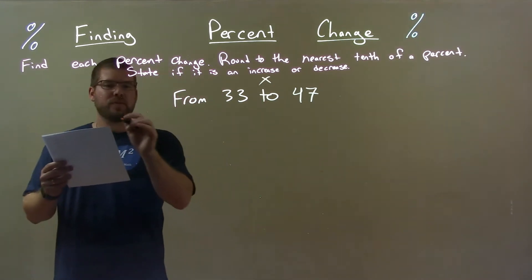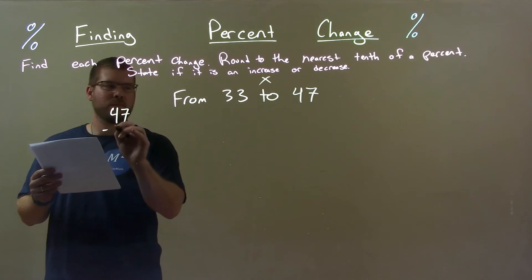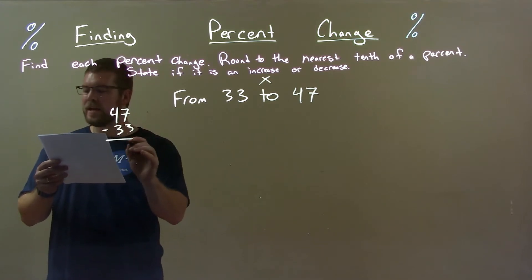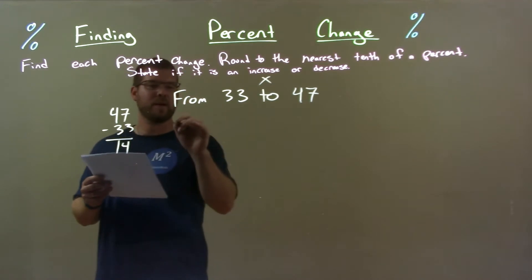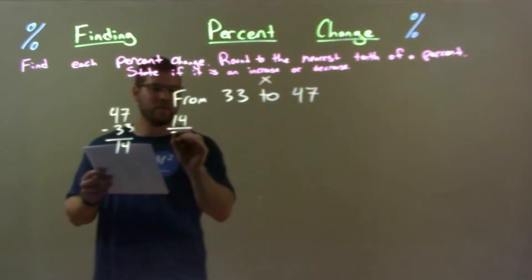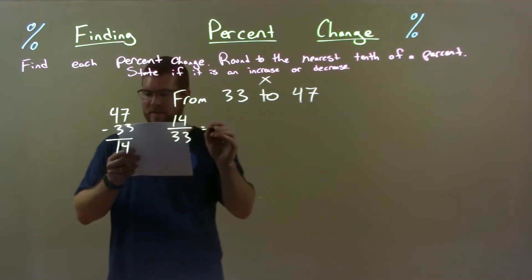Then, find the difference between the two numbers. Larger number subtracted by the smaller one. That gives us 14. 47 minus 33 is 14. Take that number 14, divide it by the first number 33, and we get the decimal.